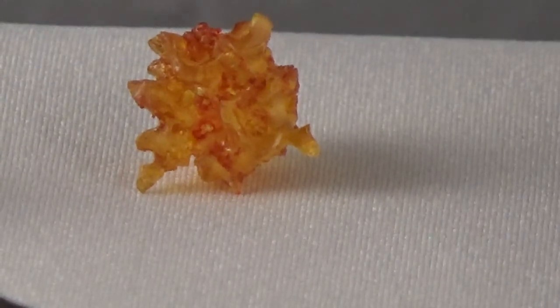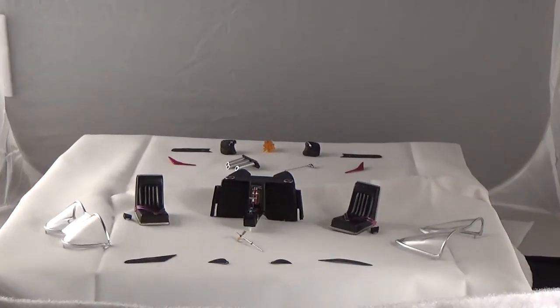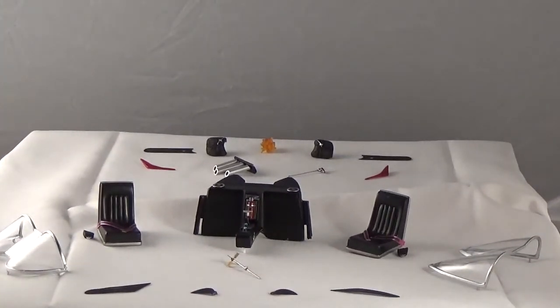Those are basically the modifications I made to the Batmobile kit. Now it's time to piece everything together. In the next mini-installment, I'm going to show you the modifications I made to the body itself, including some of the lighting.